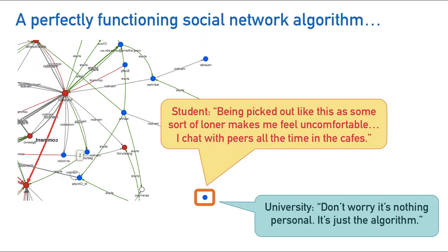So really what I want to do this afternoon is unpack in what sense that is an adequate and in what sense an inadequate analysis. From whose perspectives would that be an adequate response? The answer would probably be a computer scientist who coded it. But clearly there's more at stake here than proving that the algorithm was correctly implemented.